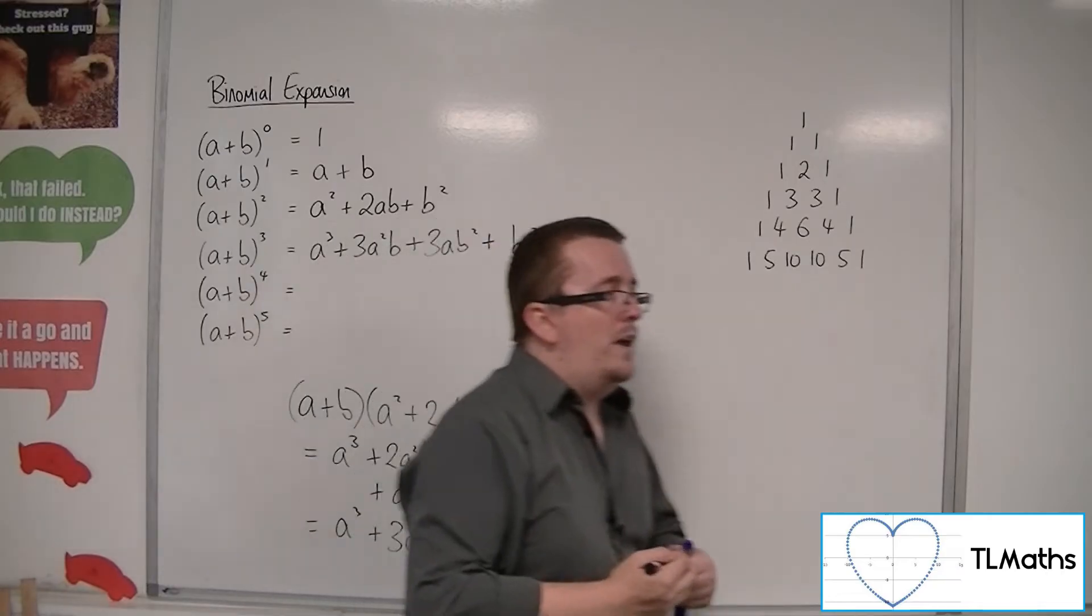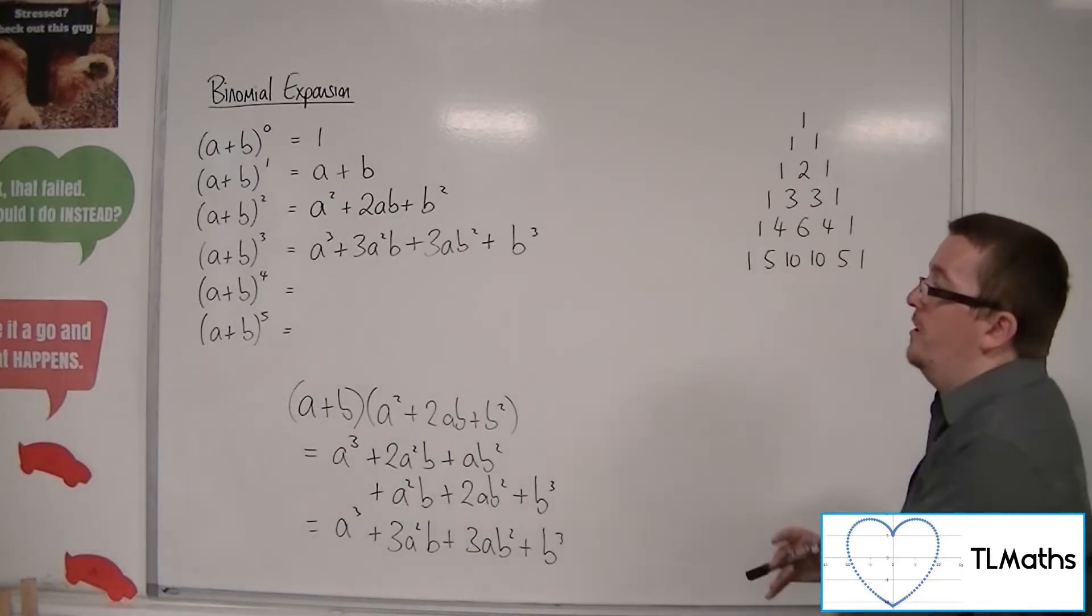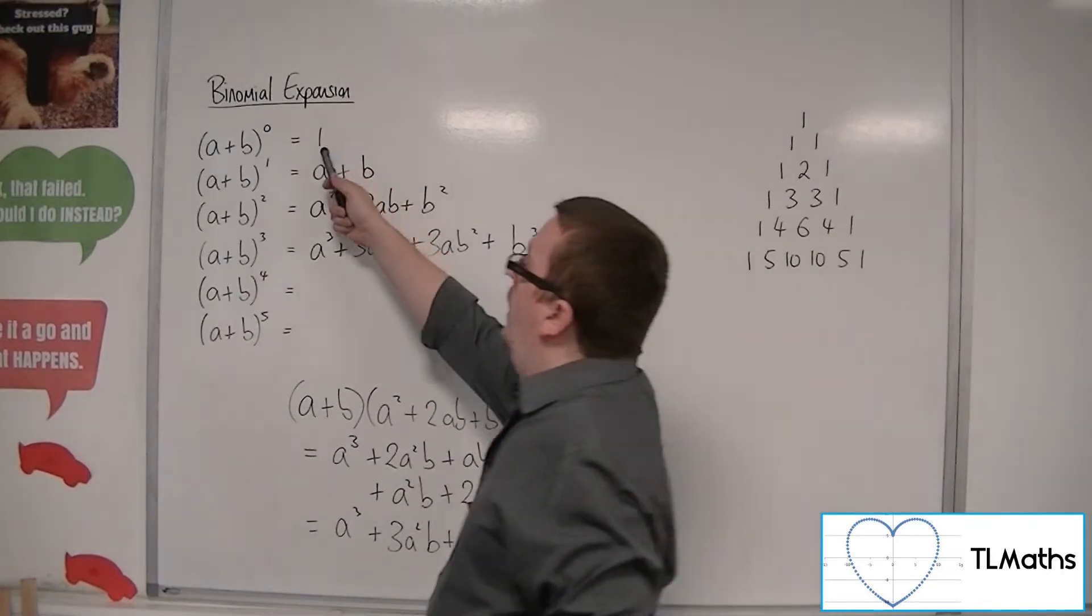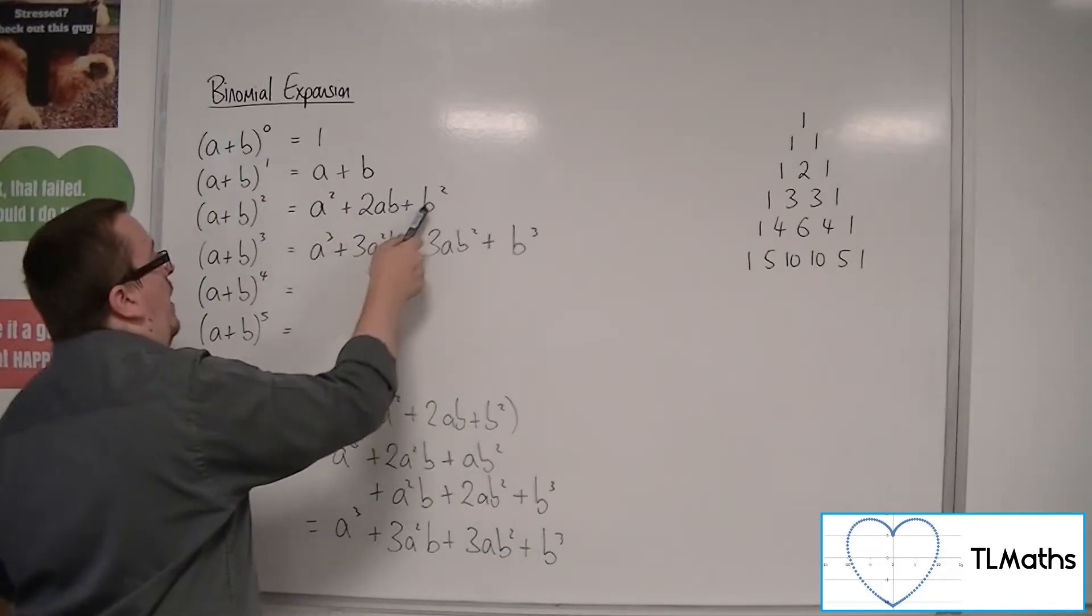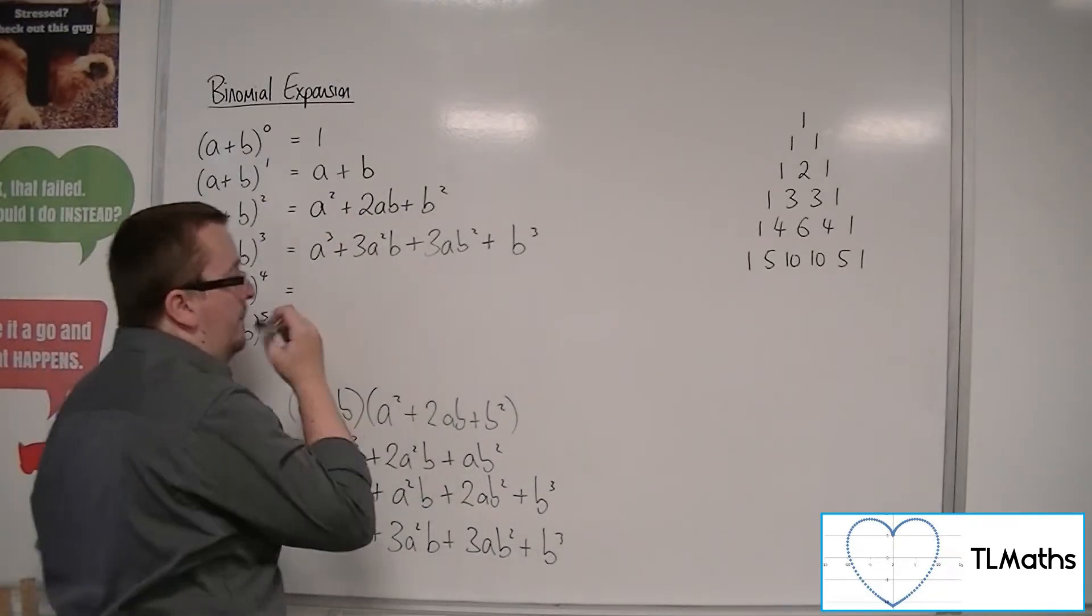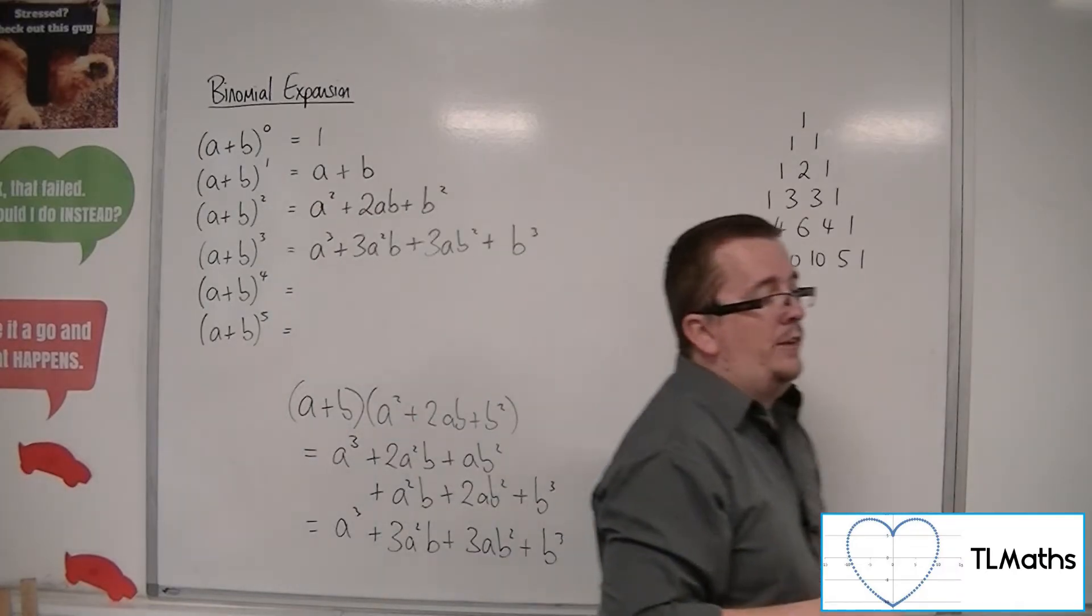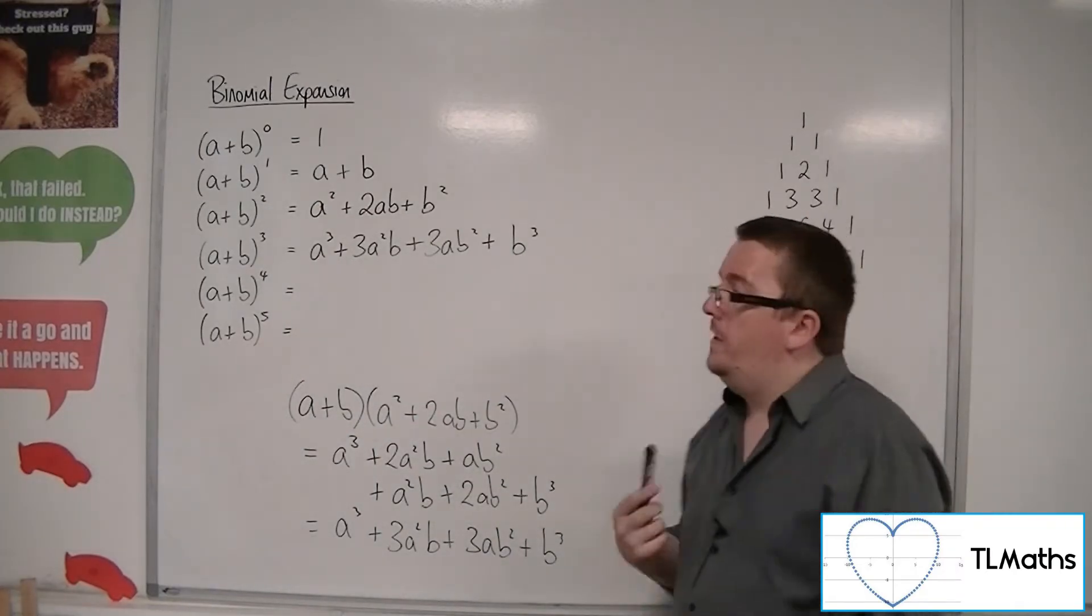And this is where we should be spotting Pascal's triangle again. 1, 1, 1. 1, 2, 1. 1, 3, 3, 1. So the coefficients from Pascal's triangle are still there.